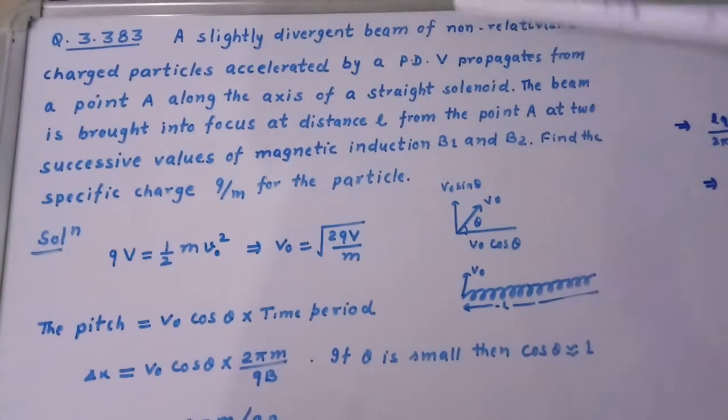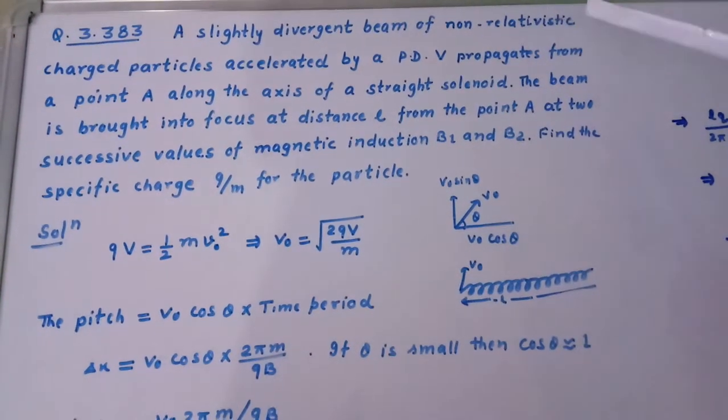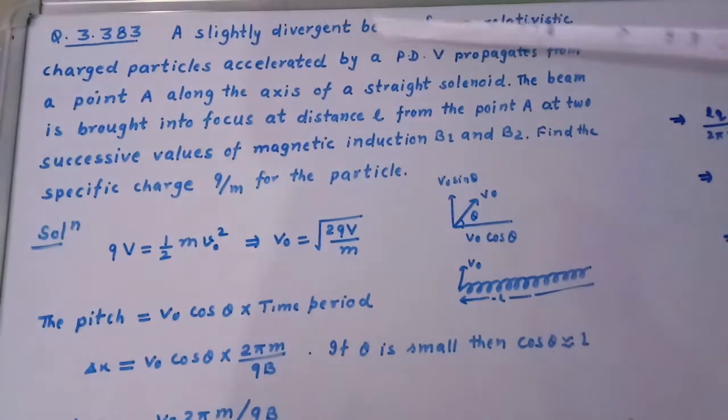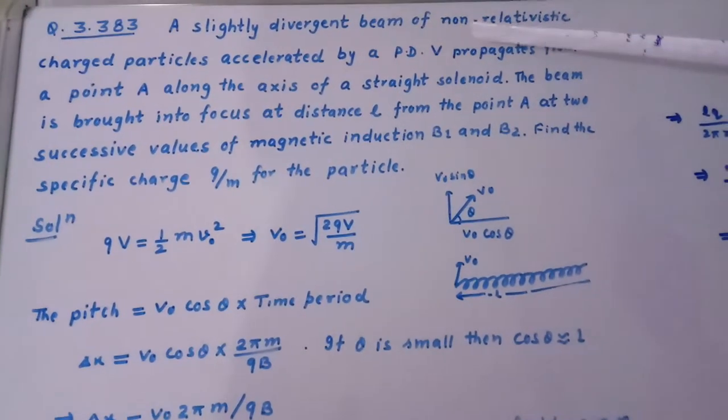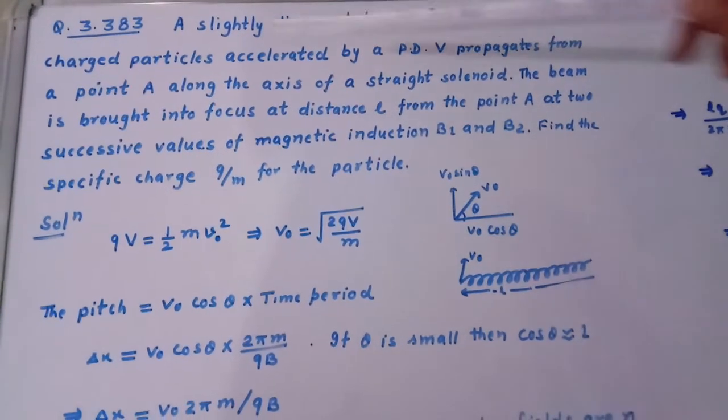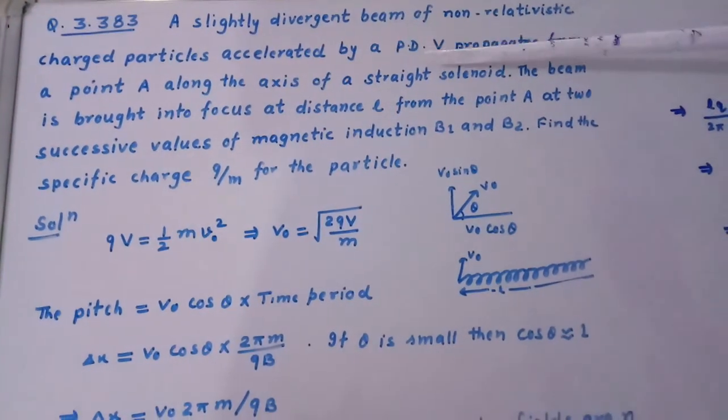A slightly divergent beam of non-relativistic charged particles accelerated by a potential difference V propagates from a point A along the axis of a straight solenoid.